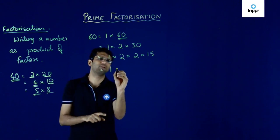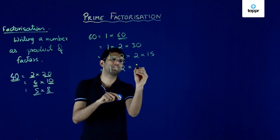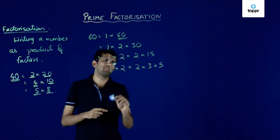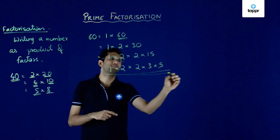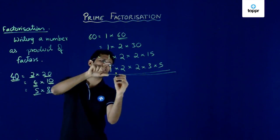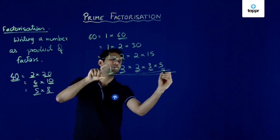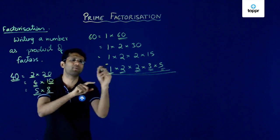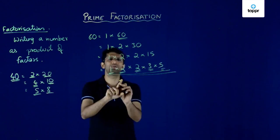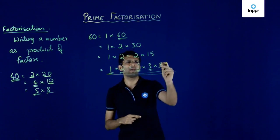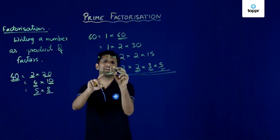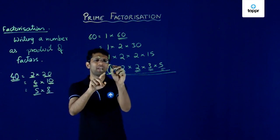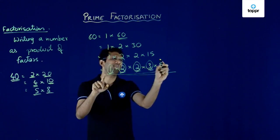Now, 1 cannot be further split, so I will retain it. 2 also will be retained as it cannot be split. But 15 can be split into 3 x 5. Now we have an expression which cannot further be split — every number here is indivisible. 1 cannot be divided by any number other than 1; 2 can only be divided by 1 and 2; 3 can only be divided by 1 and 3; and 5 can only be divided by 1 and 5. So the numbers 1, 2, 2, 3, and 5 that we have obtained are all prime numbers.